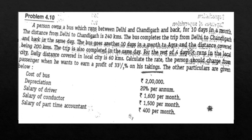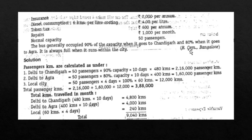For the rest of 4 days it runs in the local city, covering 60 kilometers daily. The particulars given are: cost of bus 2 lakh, depreciation 20% per annum, salary of driver Rs. 1,600 per month, salary of conductor Rs. 1,500 per month, salary of part-time accountant Rs. 400 per month, insurance Rs. 2,000 per annum, diesel consumption 6 km per liter at Rs. 4 per liter, token tax Rs. 600 per annum, repairs Rs. 1,000 per month, normal capacity 50 passengers. The bus is 90% occupied going to Chandigarh, 80% going to Agra, and always full within the city.